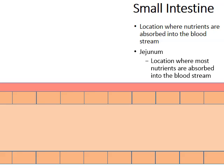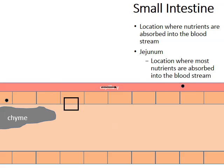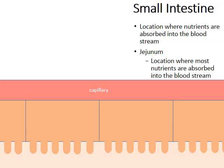Zooming in on the jejunum, we can see a capillary with blood traveling through it alongside the soupy chyme. As the chyme passes through the jejunum, nutrients are absorbed from the chyme into the capillary and bloodstream, which carries these nutrients throughout the body. When we zoom in closer to the cells lining the jejunum, we see they have little finger-like projections called villi. These microscopic villi are wonderful for increasing the surface area available for nutrients to be absorbed into the bloodstream.